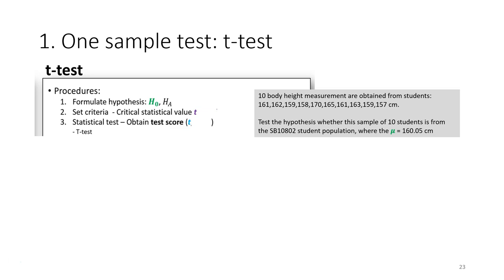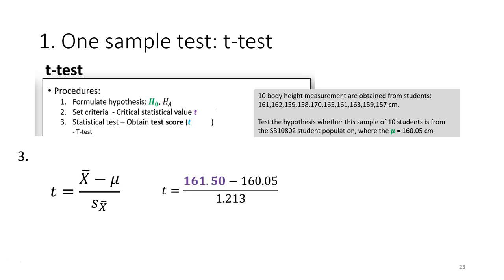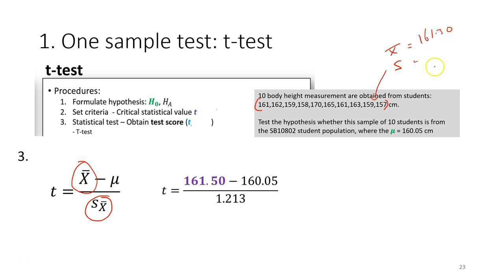The third step is to perform the statistical test. We have the hypothesis and the criteria — now we calculate using the sample data. This is the t-test formula. You need to obtain the sample mean from all the given values. The mean comes out to 161.50.